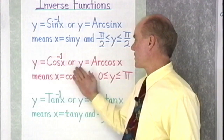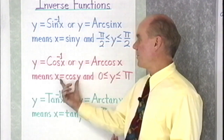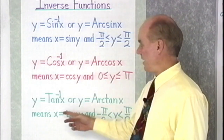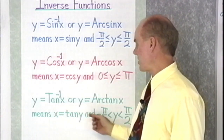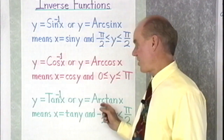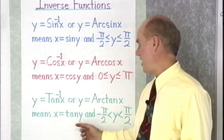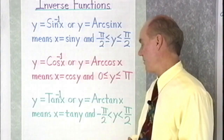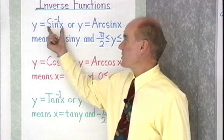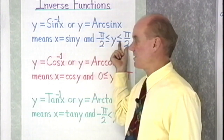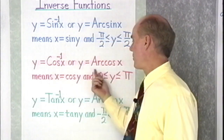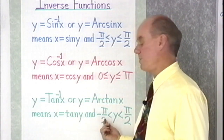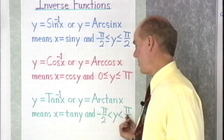Likewise, we have inverse cosine x, arc cosine x. They both mean that x is equal to the cosine of y, and y is between 0 and pi. And then last, we have arc tangent x, or inverse tangent x. Arc tangent x means that x is equal to the tangent of y, and y is between negative pi over 2 and positive pi over 2. So inverse sine is always between negative 90 and positive 90, inverse cosine always goes from 0 to 180, and inverse tangent is always between negative 90 and positive 90.